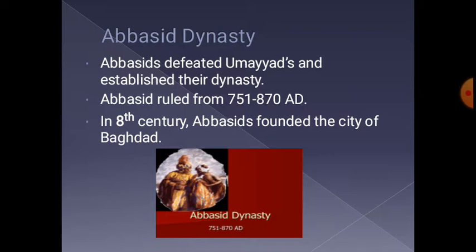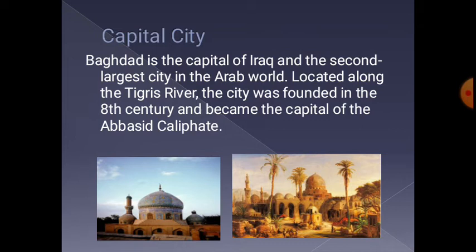The Abbasids founded the city of Baghdad as their capital. Baghdad is the capital of Iraq and the second largest city in the Arab world, located along the Tigris River. The city was founded in the 8th century and became the capital of the Abbasid Caliphate.